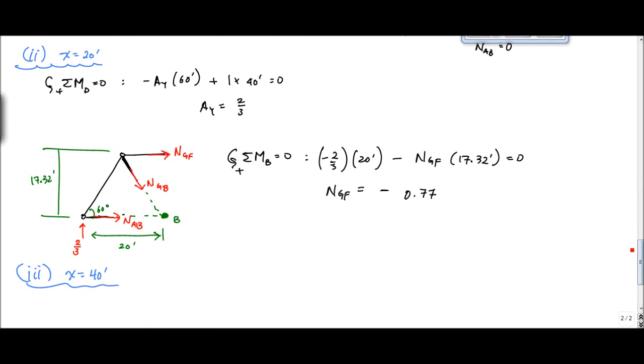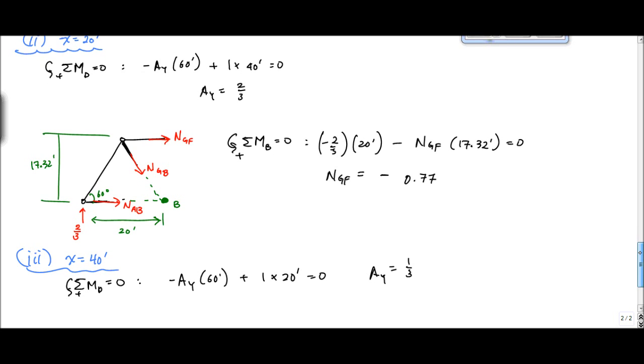It's not too different here, except that the load is at a different location. So if I sum the moments about D equal to 0, I would get minus Ay times 60 feet plus 1 times 20 feet equals 0. And that just tells me that Ay is 1 third. And that makes sense. It keeps moving across.